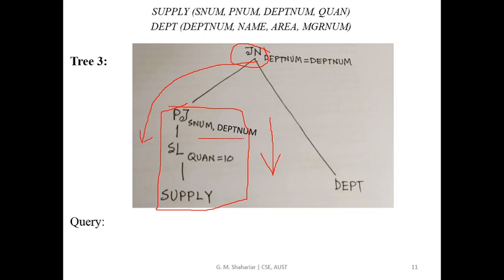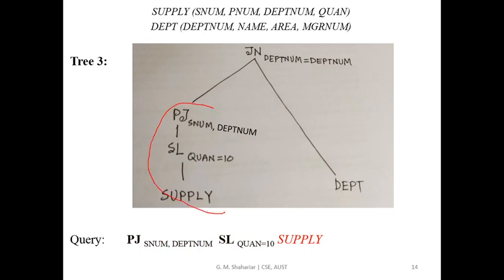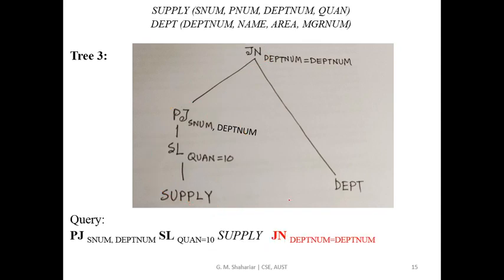The first one is the Projection — Supply number, Department number. The second one is the Selection — Quantity equals to 10. The second one is the Supply. Now the main domain is the Coins. The important domain is the identifier. The knowledge can be used as a unary operator.